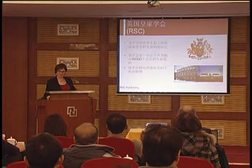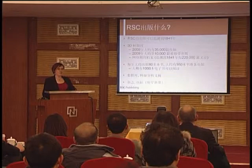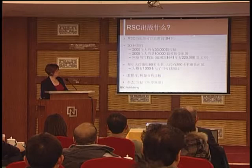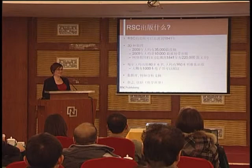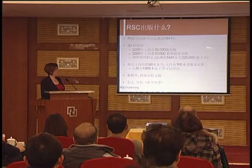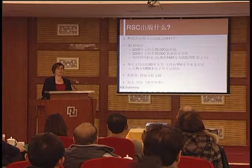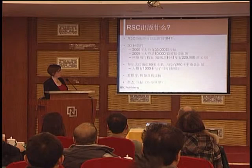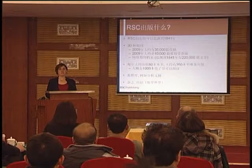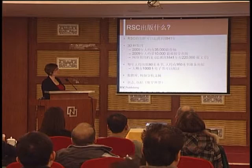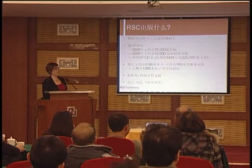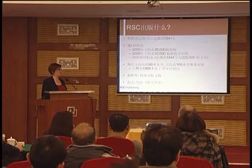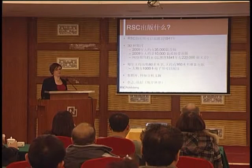RSC Publishing is part of the Royal Society of Chemistry. Our publishing activities date back to 1841 — our oldest journal is Analyst, started in 1841. We now have about 30 journals. In 2009, our journals received about 35,000 submissions, of which about 10,000 articles were published. This year we will publish over 13,000 articles across our journals. We also have an online journal archive with 220,000 articles dating back to 1841. We publish over 80 books per year with about 350 titles in print, and almost 1,000 e-books available online electronically.